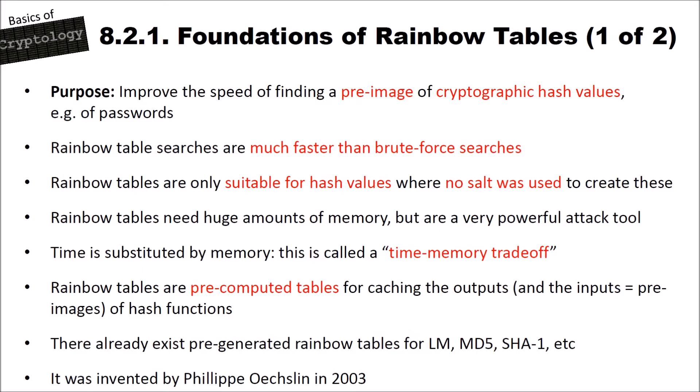There already exist pre-generated rainbow tables for some hash functions, for instance for the LAN Manager, for MD5, for SHA-1 and others. Rainbow tables were invented by Philip Oechslin in 2003.